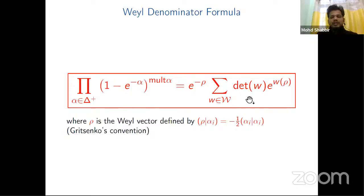Now we define the Weyl denominator formula for this. This is the product side; this is the sum side, where ρ is the Weyl vector defined by this. And this gives the same going conversion.